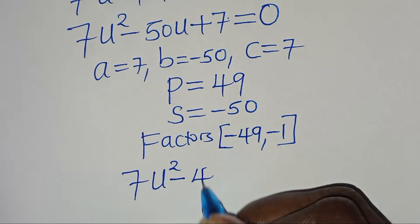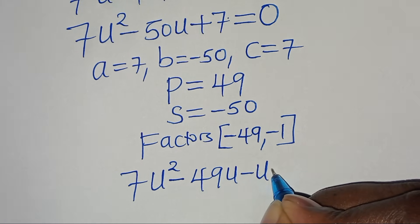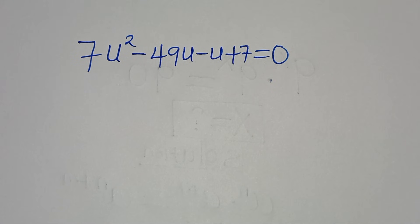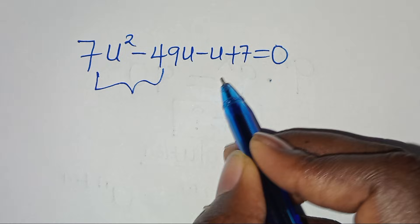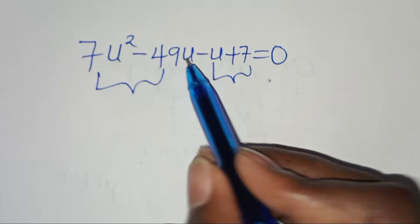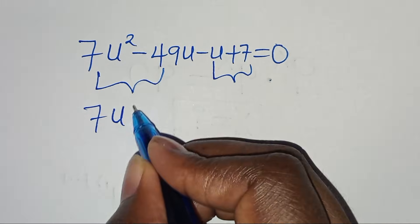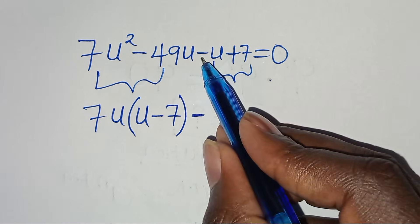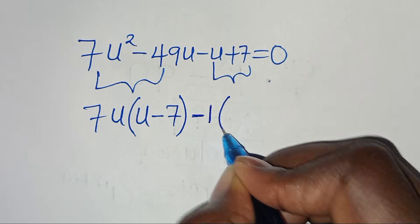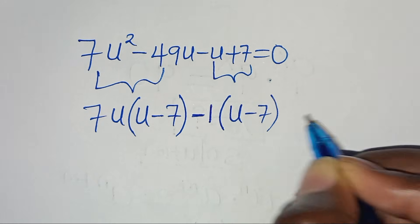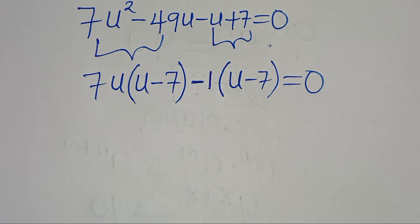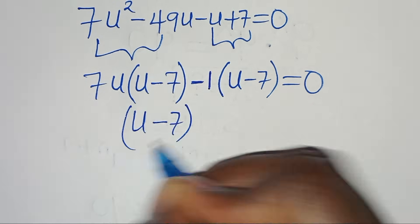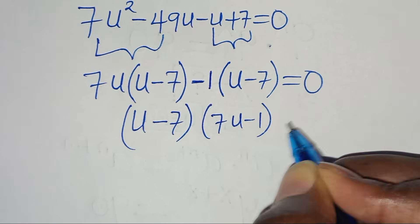So we have 7u squared minus 49u minus u plus 7 equals 0. We have two parts here. From the first part, 7u is common, so we factor out 7u to get 7u(u minus 7). From the second part, we factor out minus 1 to get minus 1(u minus 7). So we have (u minus 7)(7u minus 1) equals 0.